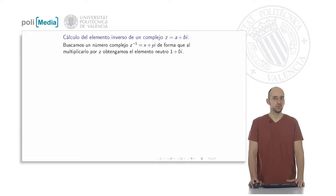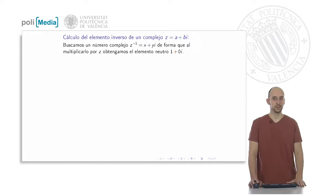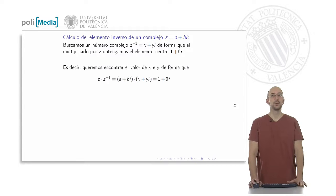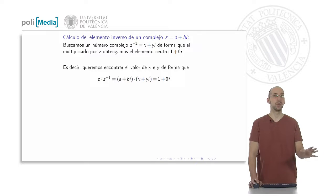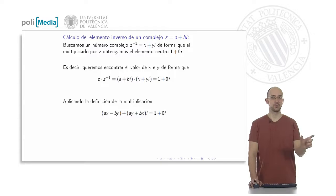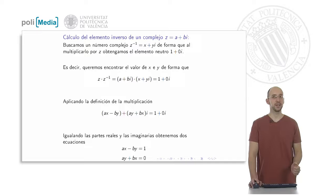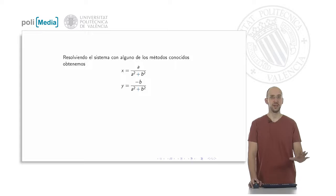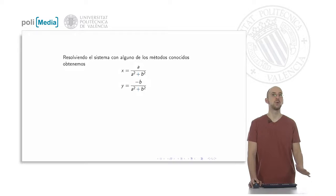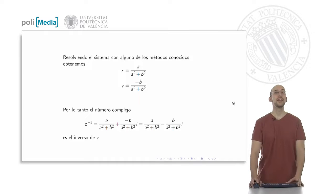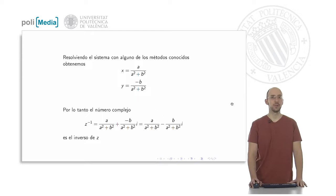Now let's derive the general formula. Given a complex number a plus bi, we look for x plus yi such that multiplying it by a plus bi gives one plus zero i. Repeating the same procedure — multiplying, equalizing real and imaginary parts — we get a system of two equations with two unknowns, whose solutions have the same structure as before but with letters a and b. The denominator is always a squared plus b squared.